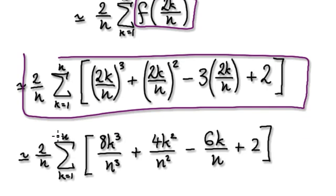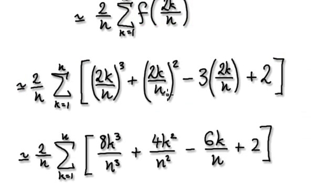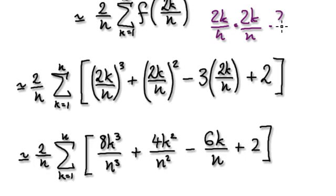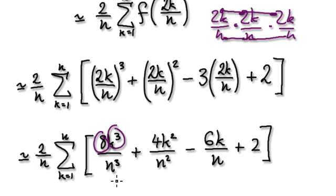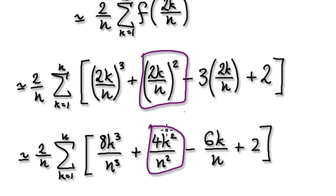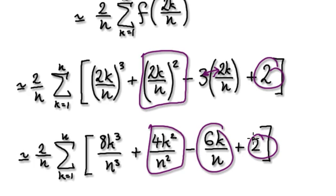Now it's just a matter of tidying things up. You have a fraction to the power of 3, so 2k over n to the power of 3 means top times top times top — that gives 8k cubed on the numerator — and bottom times bottom times bottom gives n cubed on the denominator. The same applies to the squared term, and the linear term gets multiplied to the top accordingly.